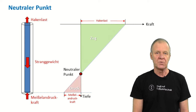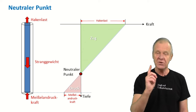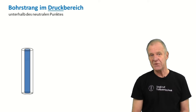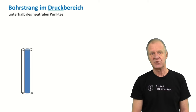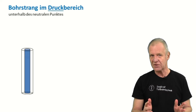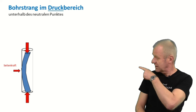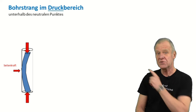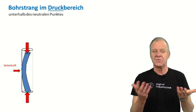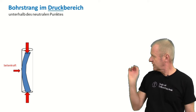Why am I telling you this? Below the neutral point, we have to consider certain effects in our drilling operation. Due to compression loads below the neutral point, the drill string will bend. And if due to bending the string gets in contact with the borehole wall, friction is created.